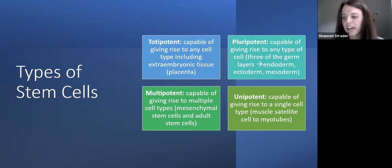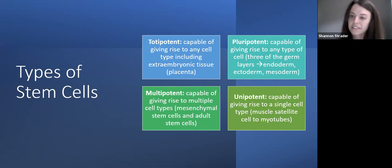And then a unipotent stem cell — an example is a muscle satellite cell — gives rise to just one cell type, like muscle.